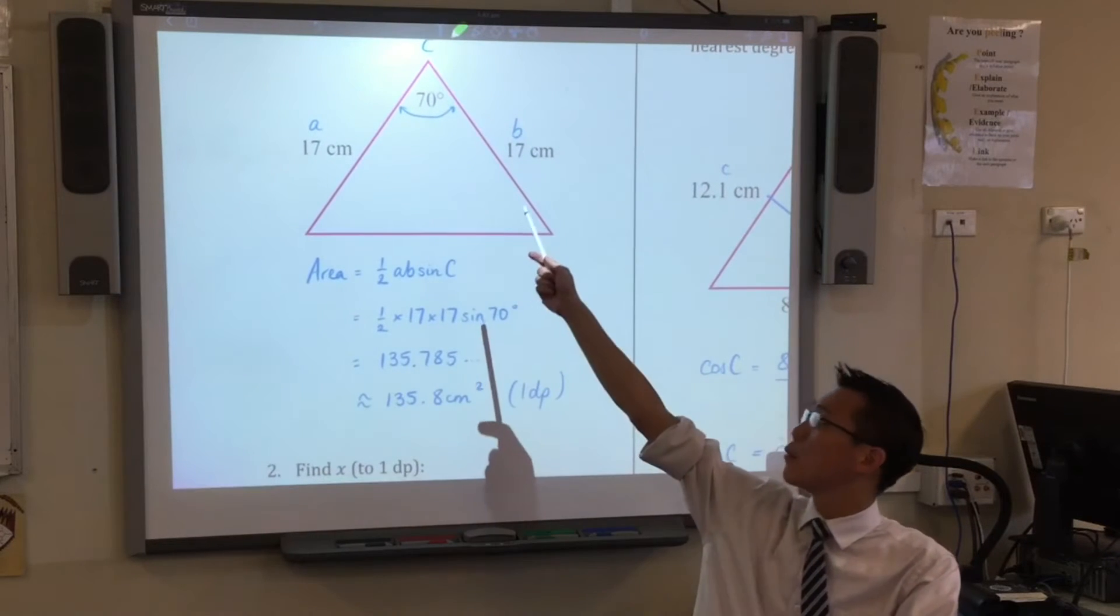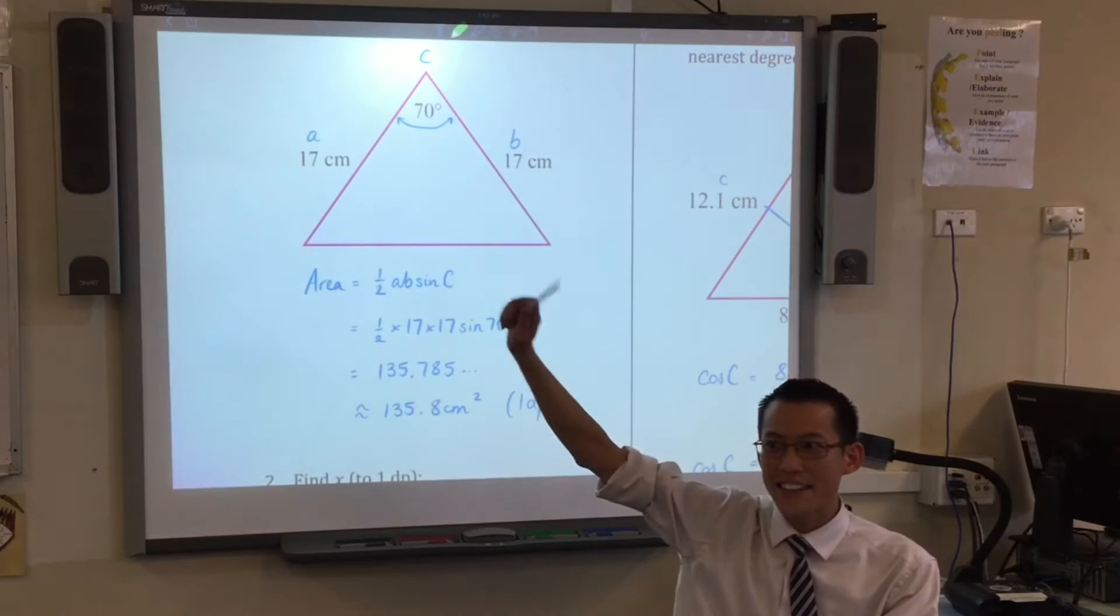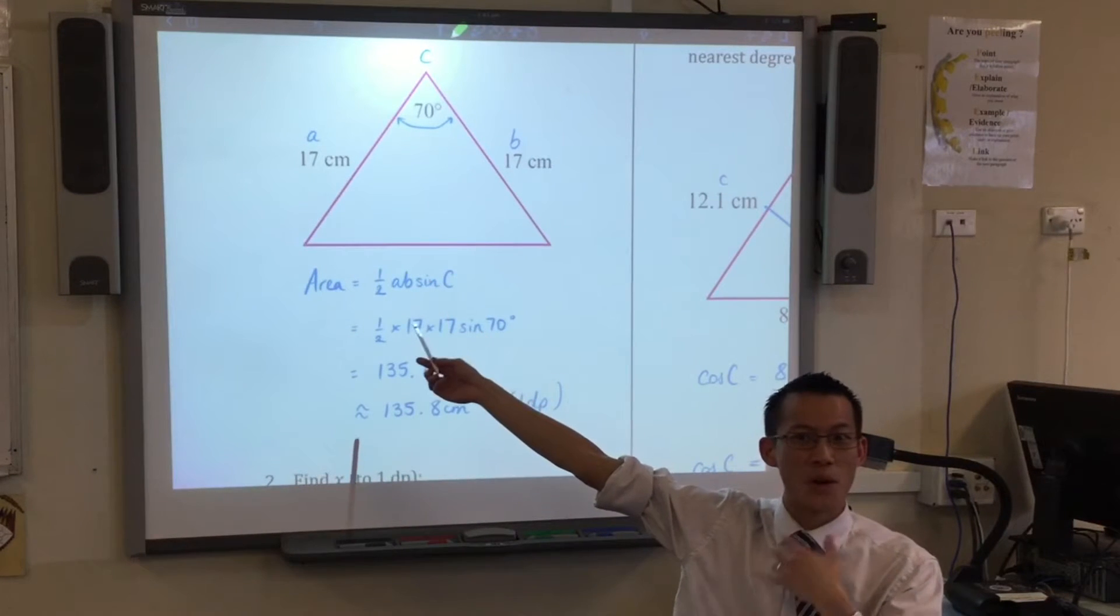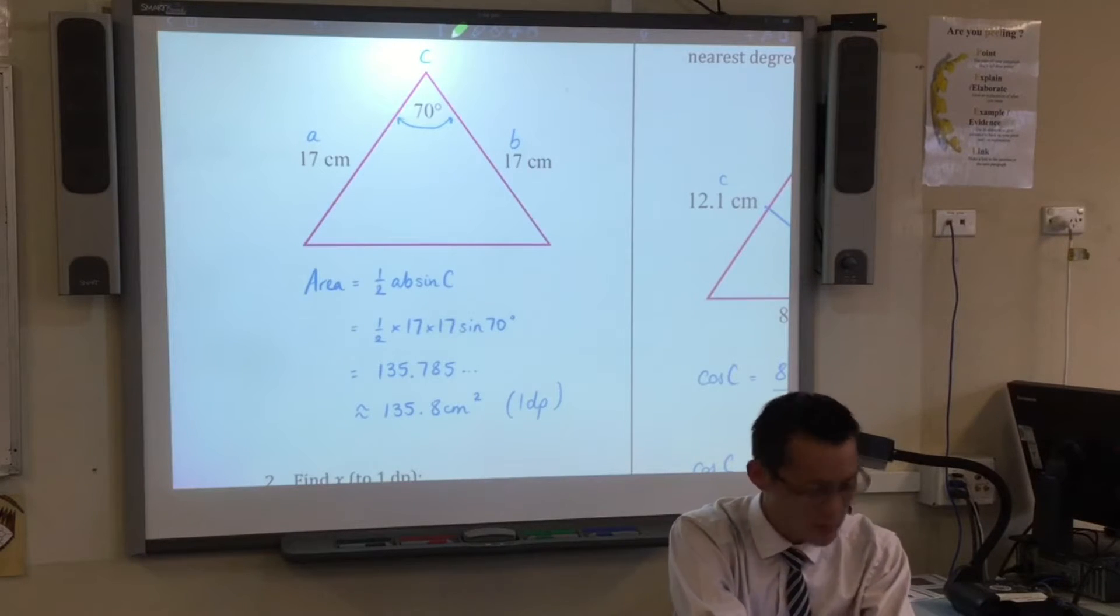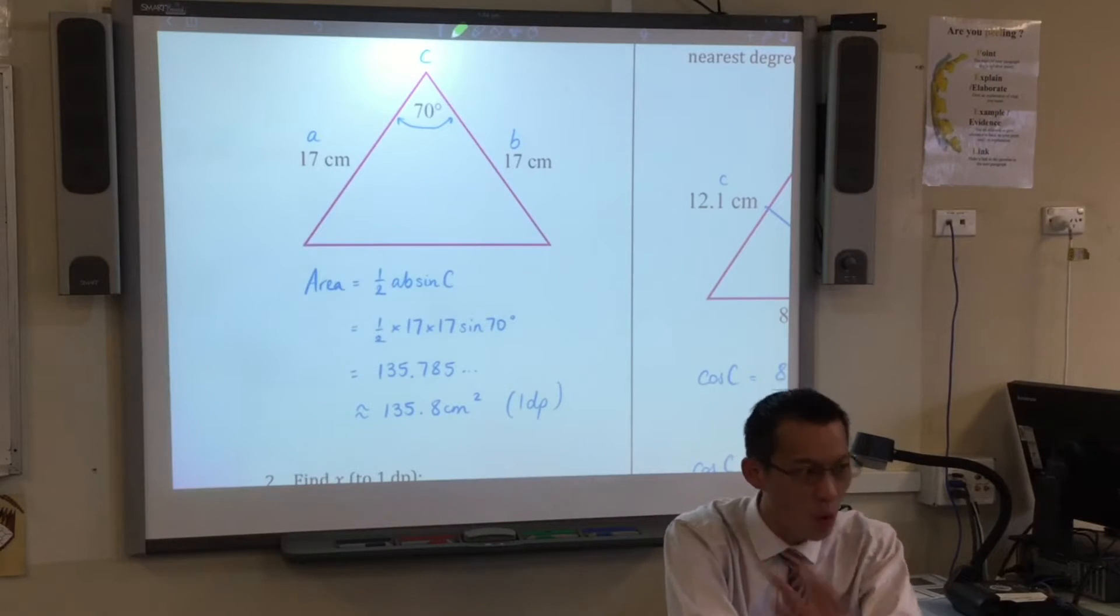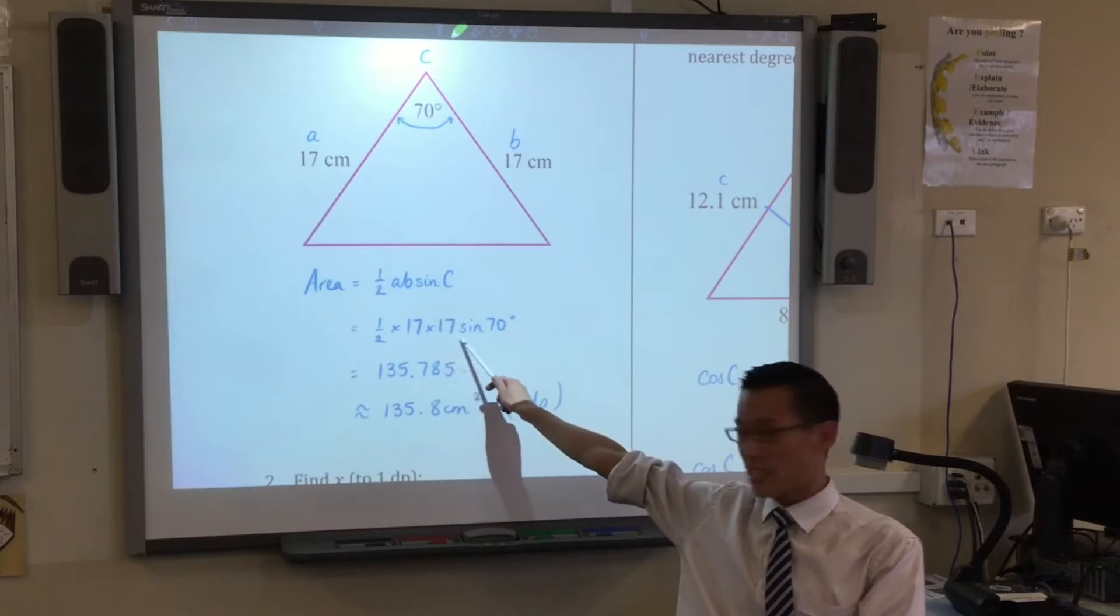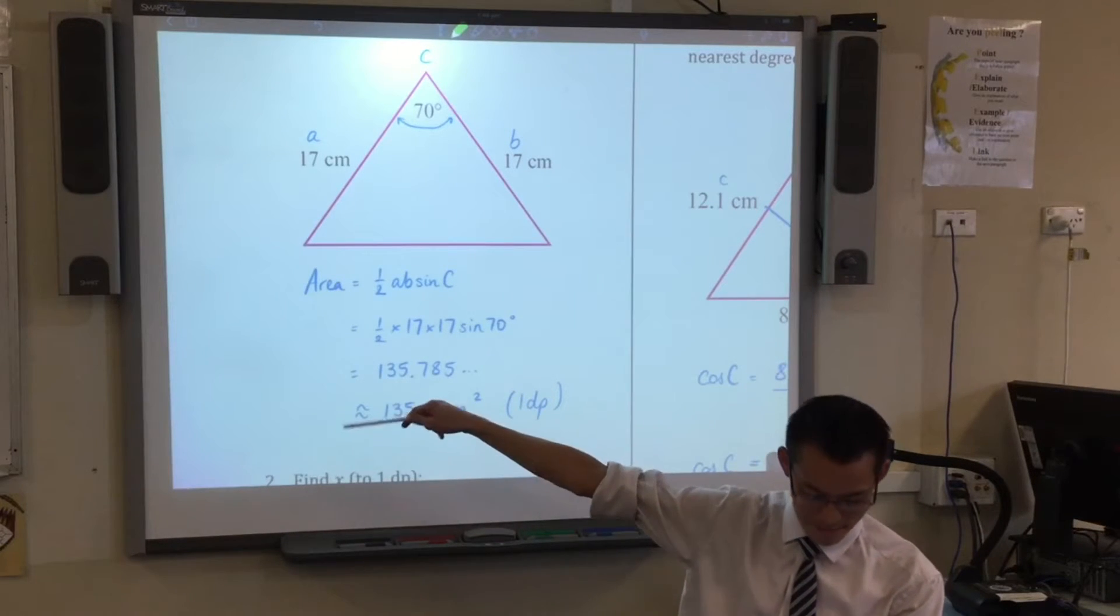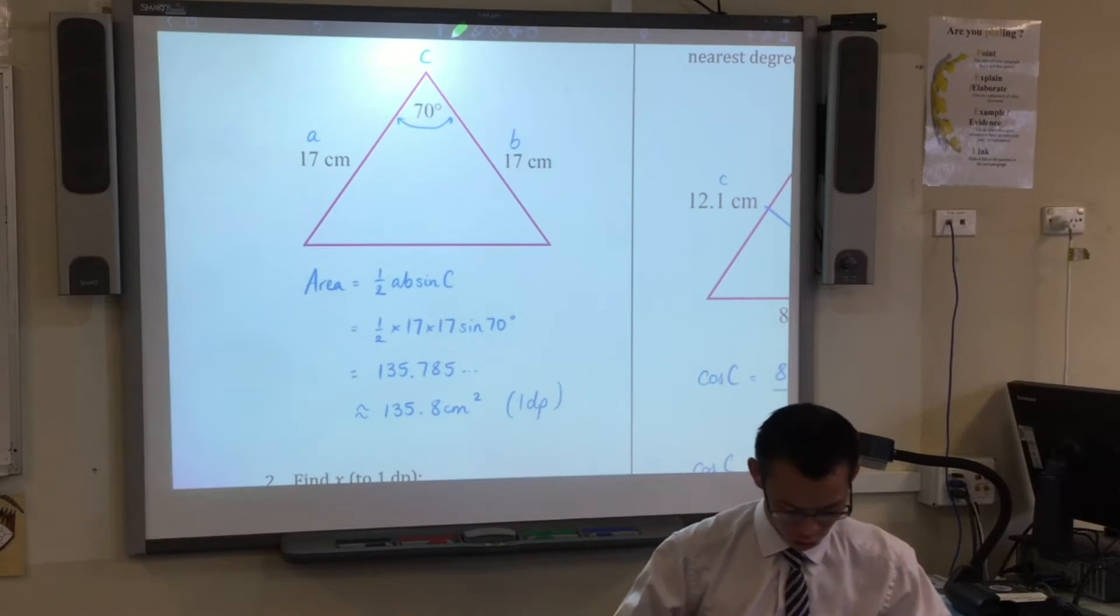So you can see on the diagram, I've identified what's what so that I know what to put into the half a, b, sin c formula and from there it's just a straight substitution. That's all that question really is. So hopefully you were able to get to this point, pop it into your calculator and there it is to one decimal place. Are you happy with that? Okay, so far so good.